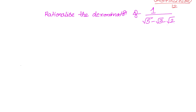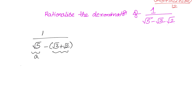Now let's solve the same problem by picking different values of a and b. This time we write 1 divided by (√5 − (√3 + √2)). Here a = √5 and b = (√3 + √2). Since we have 1 by (a − b), we multiply with (a + b), giving (√5 + √3 + √2) divided by (√5 + √3 + √2).